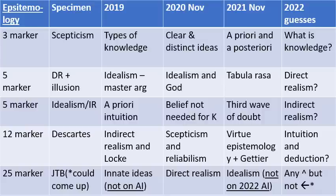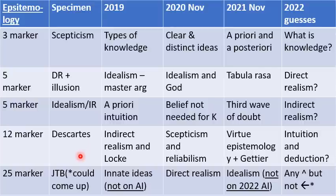Let me turn on the laser pointer. By the magic of technology, here is a floating red dot. On the specimen paper you've got a three marker on scepticism, a five marker on direct realism and the argument from illusion, a five marker on idealism and indirect realism, a twelve marker on Descartes, and a 25 marker on JTB — the tripartite definition of knowledge.